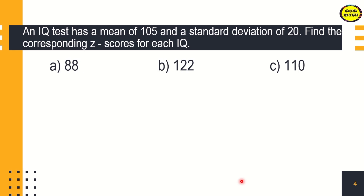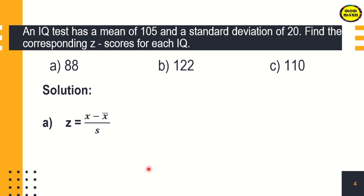For example, an IQ test has a mean of 105 and a standard deviation of 20. Find the corresponding z-scores for each IQ. First, the score is 88. Using the formula, value minus the mean over standard deviation, we substitute: 88 minus 105, divided by 20. The answer is negative 0.85.